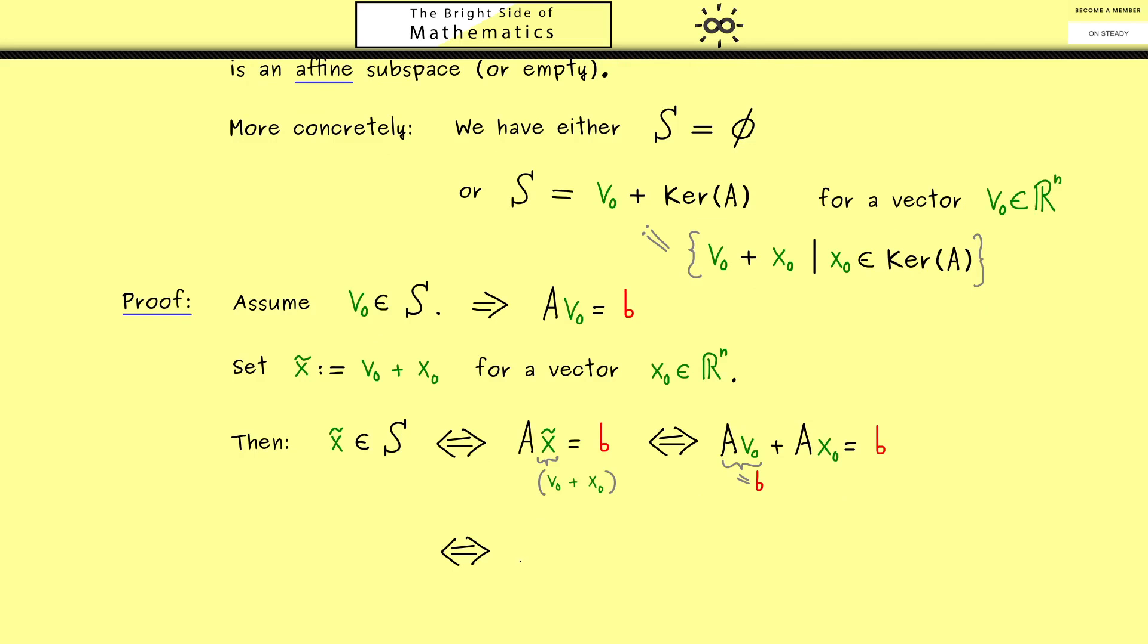And then the only thing that remains is A times x_0 is equal to the zero vector. And at this point please recall that this is by definition exactly the property that x_0 lies in the kernel of A. And there we have it, this is our last equivalence we need. You should see, with this equivalence left and right hand side here, we have shown the equality of both sets there. So we can mark that this ends our proof.